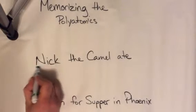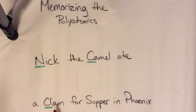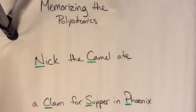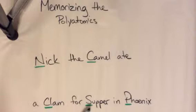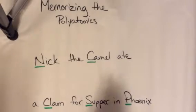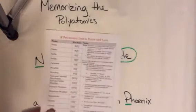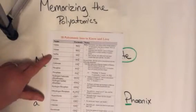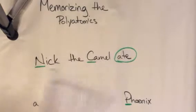Here's how this works. The first consonants of each word stand for the element — so this would be for nitrogen, carbon, chlorine, sulfur, phosphorus. We're going to be doing the "-ates". If you look on this sheet, we're talking about nitrate, sulfate, carbonate, phosphate, chlorate. So these are the "-ates".